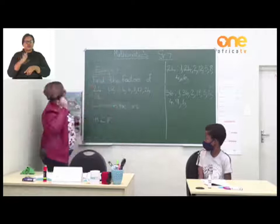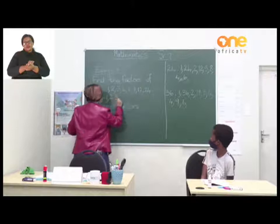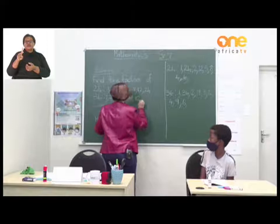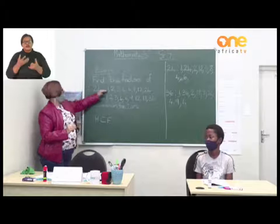So the factors of 36 in order are: 1, 2, 3, 4, 6, 9, 12, 18, and 36. We have found the factors and put them in order. Our next step is to find the common factors.